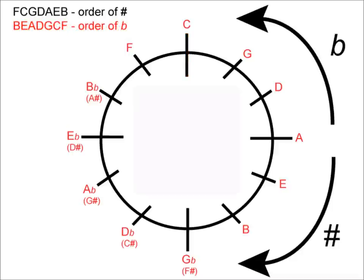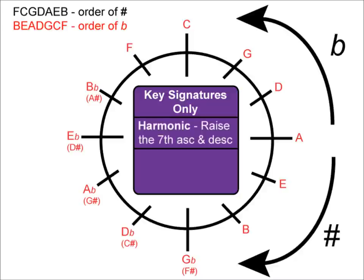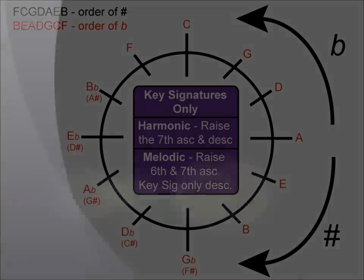Before we end, I just have one very important piece of information about minor keys. The circle of fifths for minor keys will only help you calculate the key signature — this is only part of the step in calculating minor scales. A harmonic minor raises the seventh note of the scale, whereas the melodic minor raises the sixth and seventh notes ascending, but uses just the key signature in the descending form of the scale. I do have other videos available which explain these rules in more detail. The circle of fifths for minor keys is only part of the solution to creating minor scales.